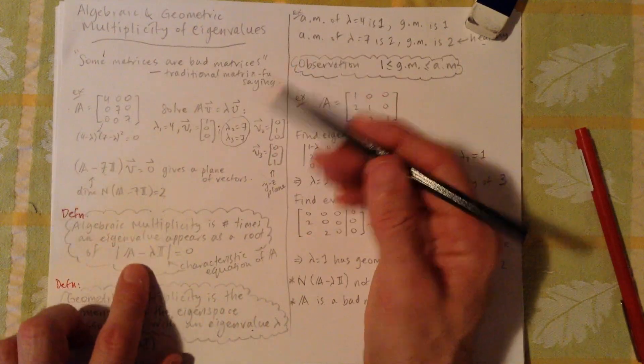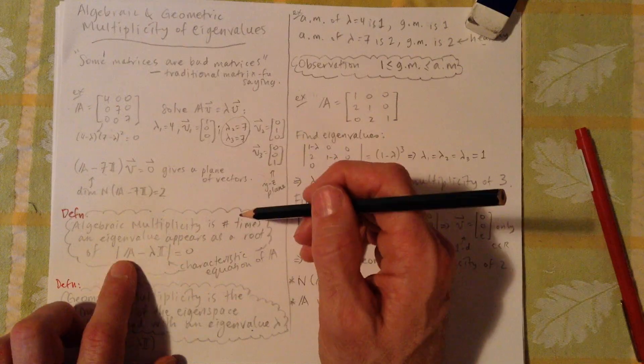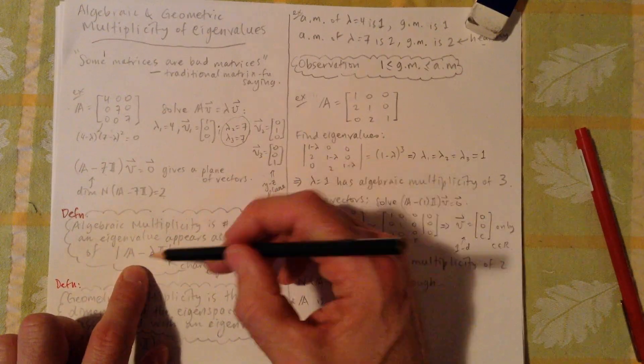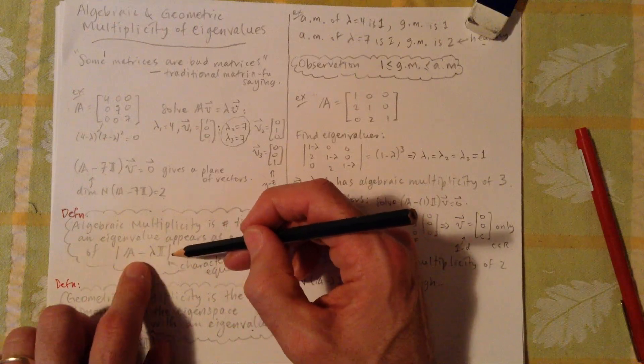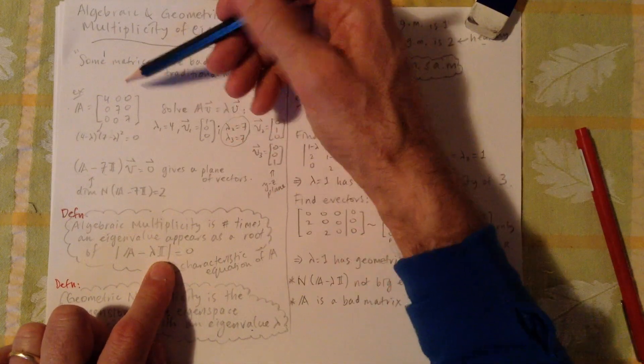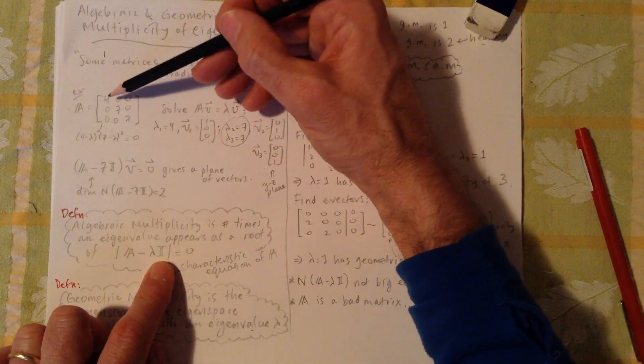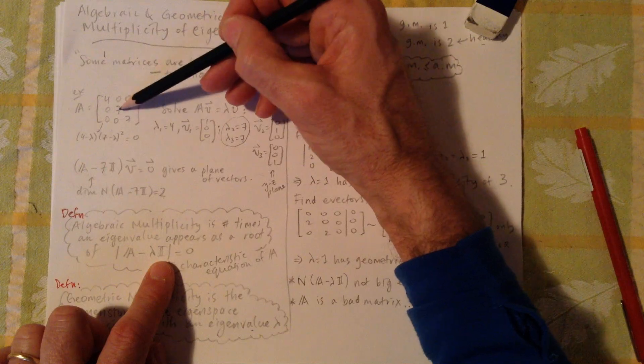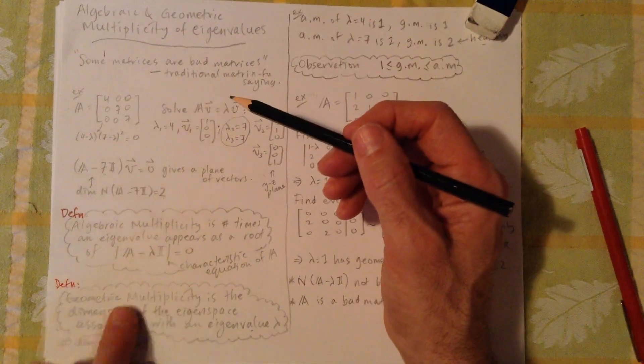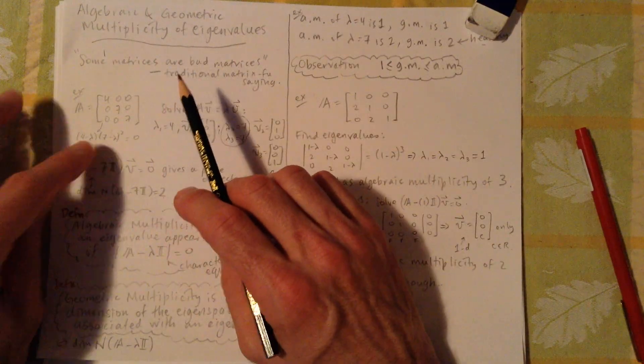So here are the terms. Algebraic multiplicity is the number of times an eigenvalue appears as a root of the characteristic equation, the determinant of A minus lambda I equals 0. And so here, the algebraic multiplicity of 4 is 1, of 7 is 2. There are two of these. So that's algebra, right? This is algebra.